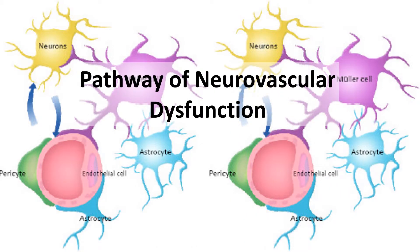In the presence of chronic hyperglycemia, if the neurovascular unit is unable to maintain homeostasis, a cascade of events causes neurovascular dysfunction which may lead to vision loss and blindness.